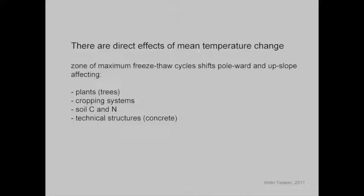The maximum zone of freeze-thaw cycles in North America is approximately the US–Canada border. If you go further south it stays above zero more; further north it stays below zero. That is the zone with maximum freeze-thaw cycles, and you'll see a tremendous absence of trees there. I once went into that region with a forester from Kenya who said, 'This is wonderful — I only have to learn three new species. In Kenya we have 300 tree species.' It's true because only three tree species can survive that freeze-thaw fluctuation. Similarly, cropping systems need to adapt to freeze-thaw cycles.